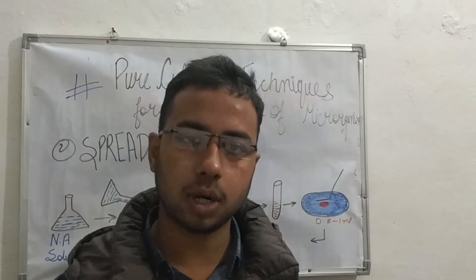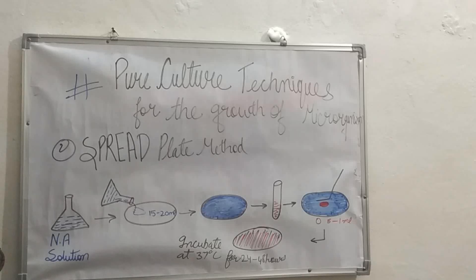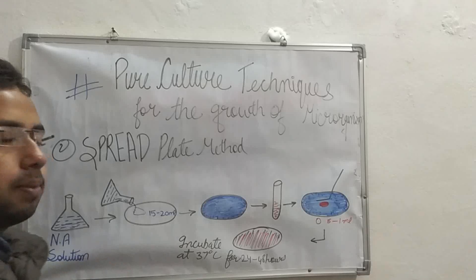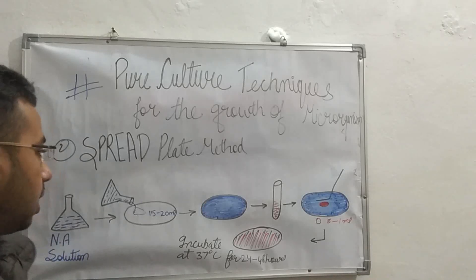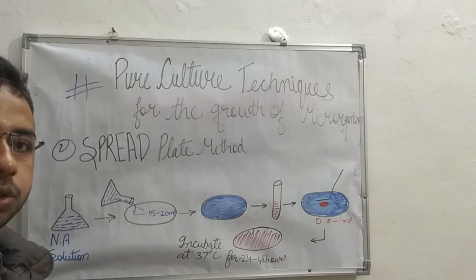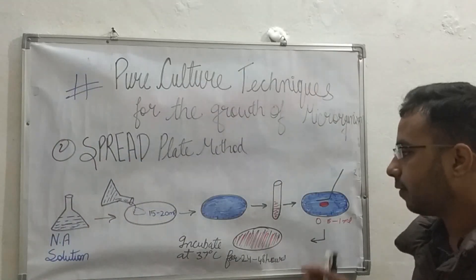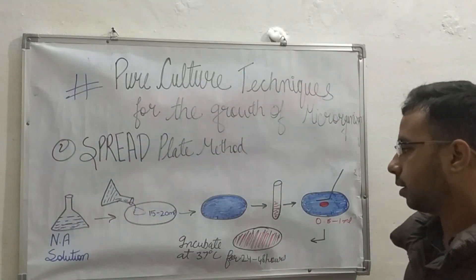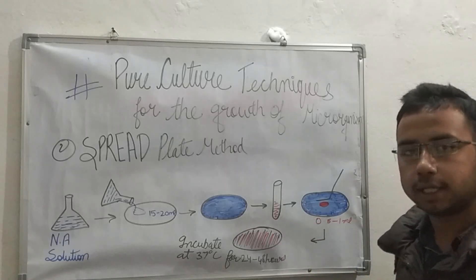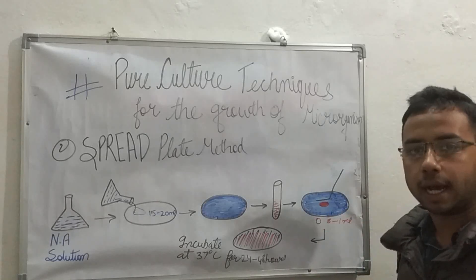For the spread plate method, we need nutrient agar solution autoclaved at 15 psi, 121 degrees Celsius for 15 minutes, and autoclaved petri plates. We pour 15 to 20 ml of nutrient agar solution onto the petri plate and leave it for solidification. After solidification, we inoculate some microbial culture which is 10-times diluted onto the solidified agar media.